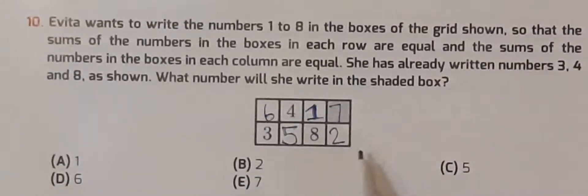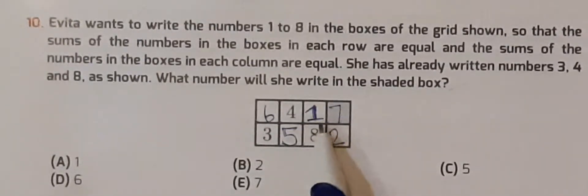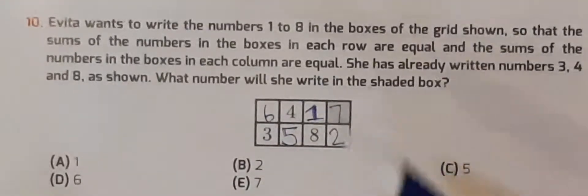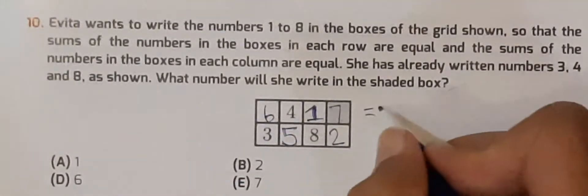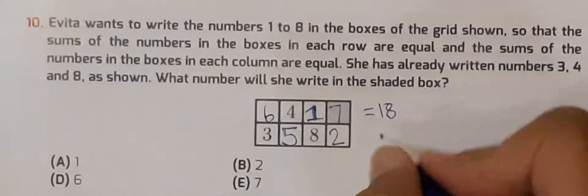So 6 plus 4 plus 1 plus 7 is equal to, I guess, 10, 17, and 18. This is equal to 18. Now 5, 6, 7, 8, plus 2 plus 8 is also equal to 18.